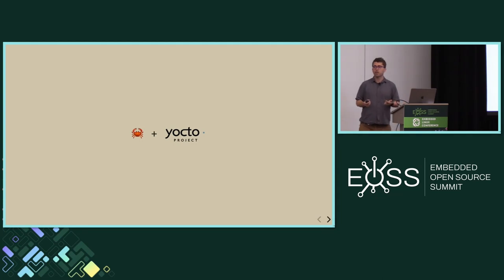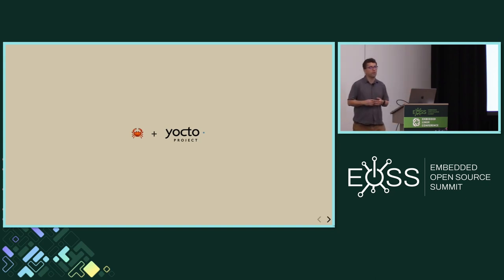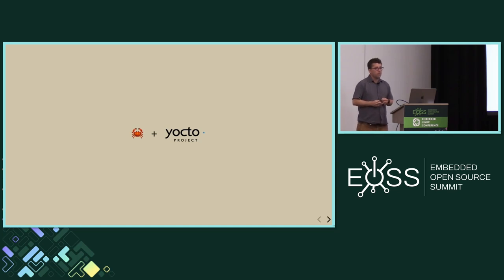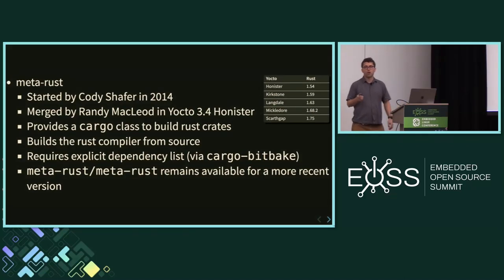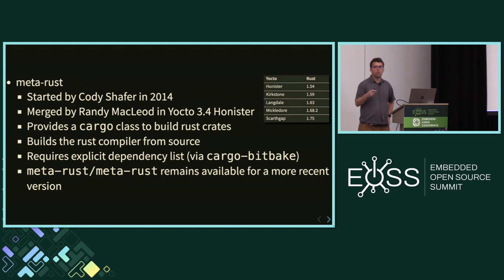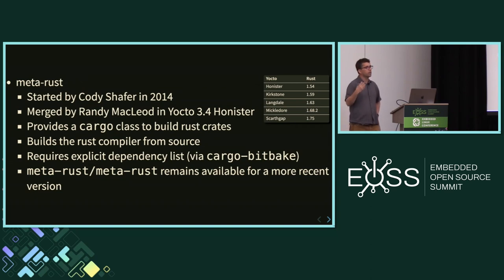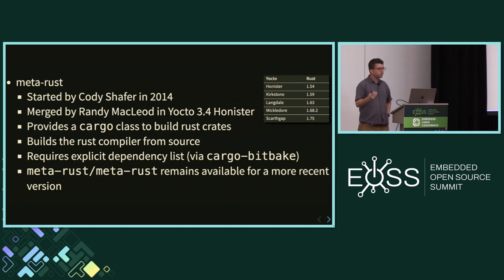The next question is how to ship code to users, which for us mostly means Yocto. There are two solutions to build Rust code in Yocto. The first is called MetaRust, a layer started in 2014 by Cody Schaefer, merged into OpenEmbedded at Yocto 3.4 Honister — so it's been official since Honister. It provides a Cargo class: you make a new recipe, inherit the cargo class, point to your cargo.toml file, and it builds your Rust project and includes the binary in the target image, just like any Yocto recipe.